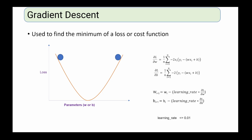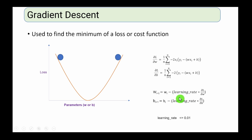The algorithm starts with an arbitrary point and calculates gradients with respect to each variable. It then updates the variables or parameters using the formula: parameter minus learning rate times the gradient — the negative sign indicates the value is decreasing. It keeps repeating these steps until it gets to the minimum value, where the slope is zero.